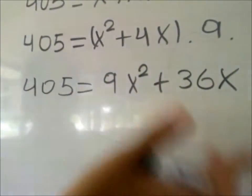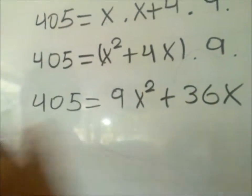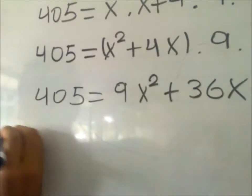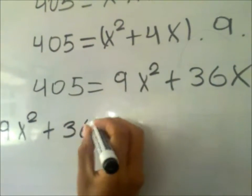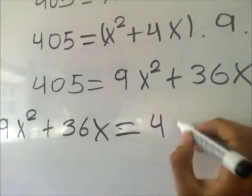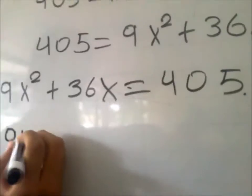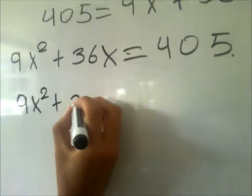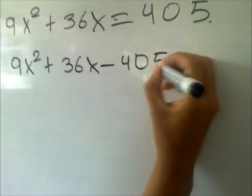Once we have this, we proceed with the letters to the left and the numbers to the right. 9x² plus 36x is equal to 405. We set equal to 0: 9x² plus 36x minus 405 is equal to 0.